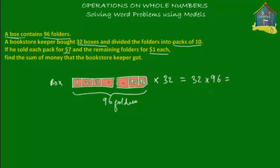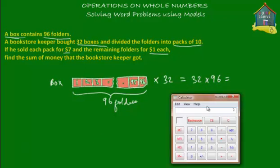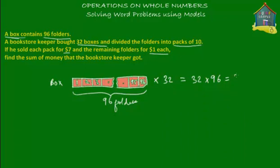I have no idea what that number is, so I'm going to use a calculator. Let's find out: 32 times 96 is equal to 3072. So 32 boxes have 3072 folders.